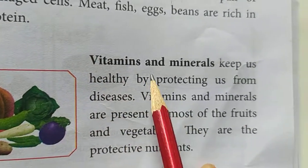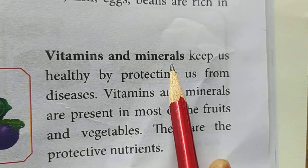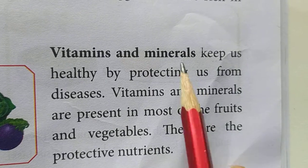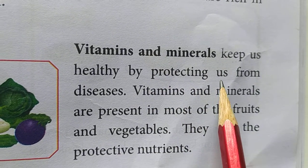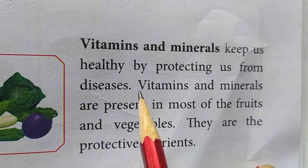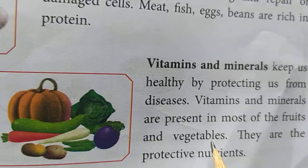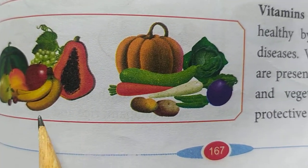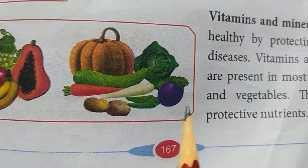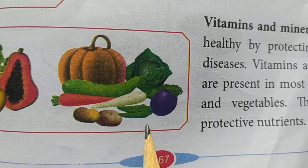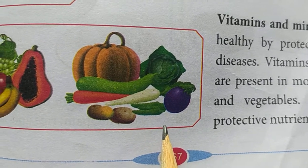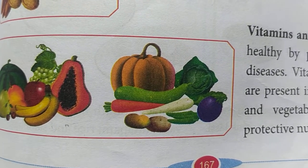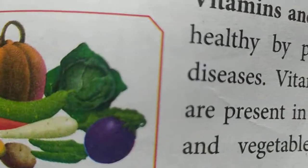Next, vitamins and minerals. These are very important nutrients in our food. They help protect us from diseases and are mostly present in vegetables and fruits. They are called protective foods. That is why we should eat all types of vegetables and fruits.